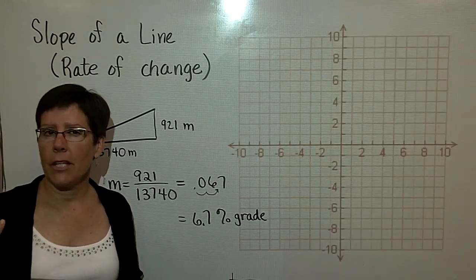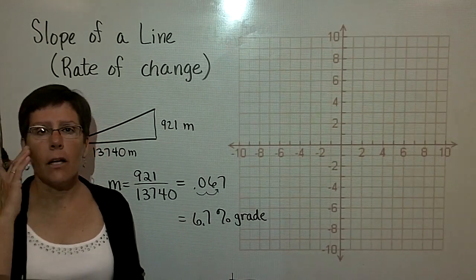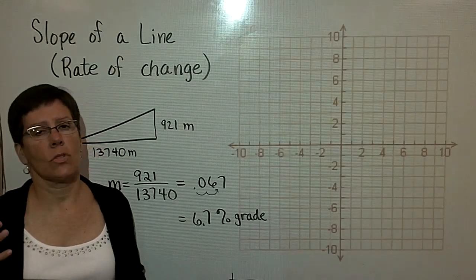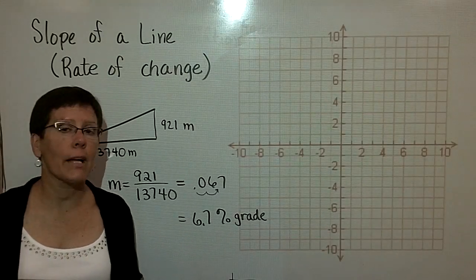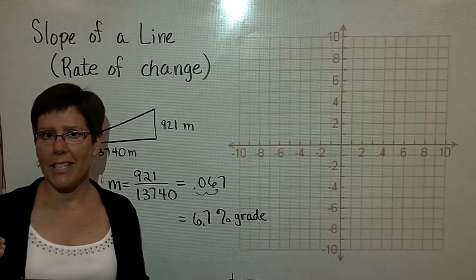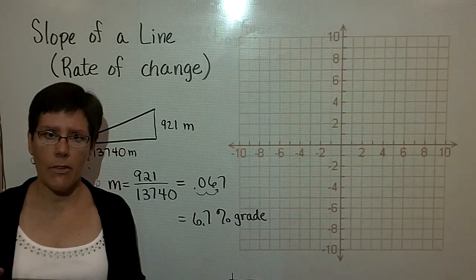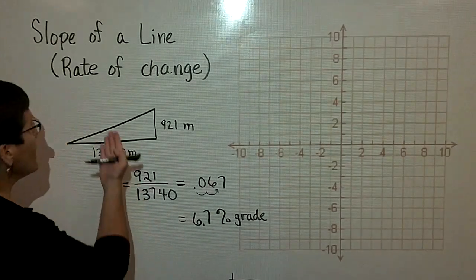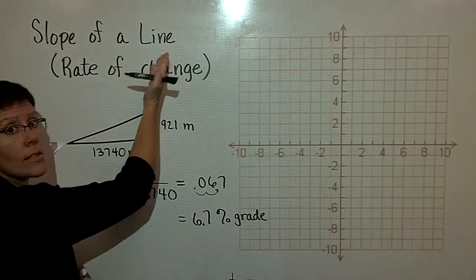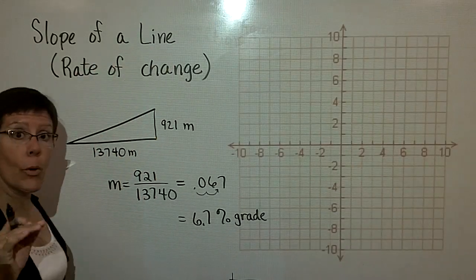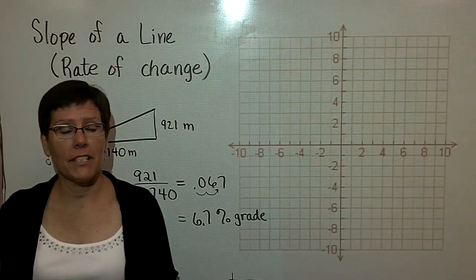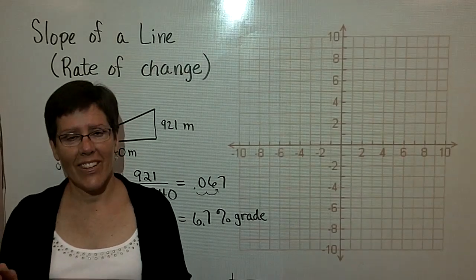You often see, if you're driving in a hilly area, Smoky Mountains, in Indiana there's some hilly areas, the Rocky Mountains, you'll see grade signs that say caution 7% grade. That's this rate of change, that's the slope of the line. Very important topic for our everyday use.